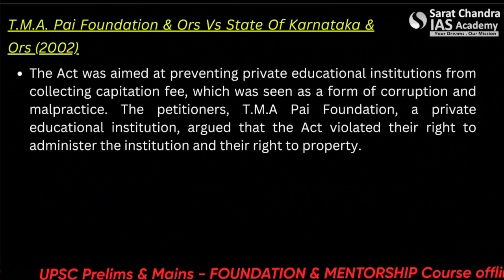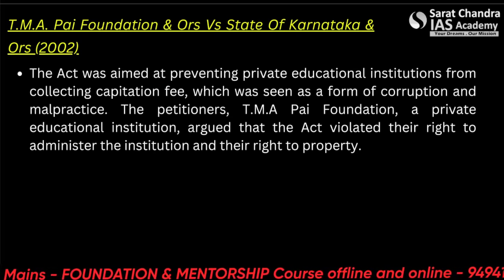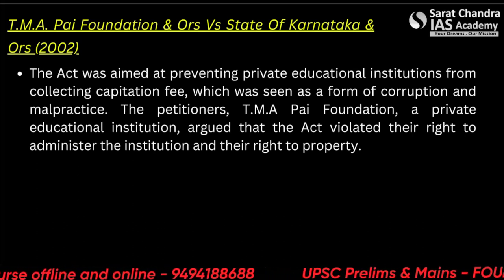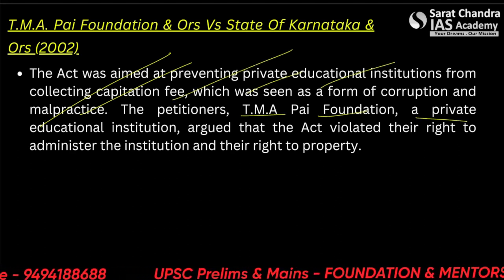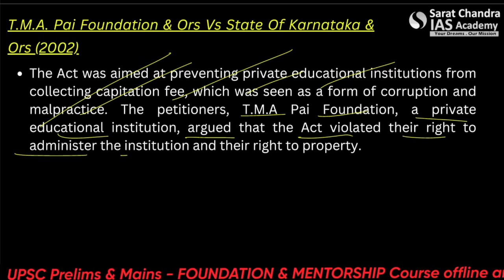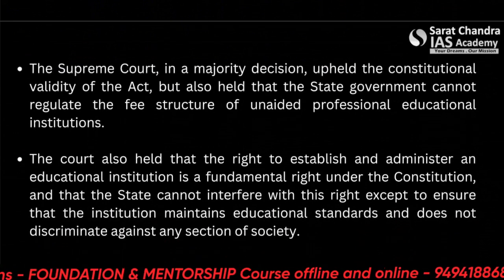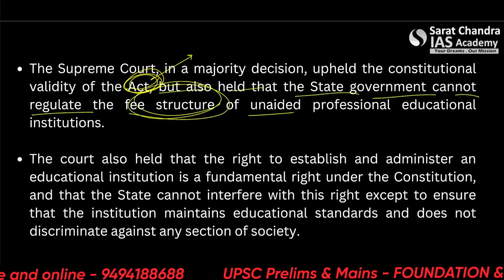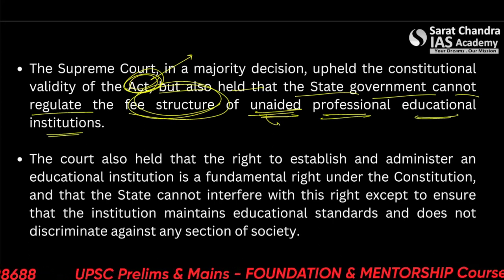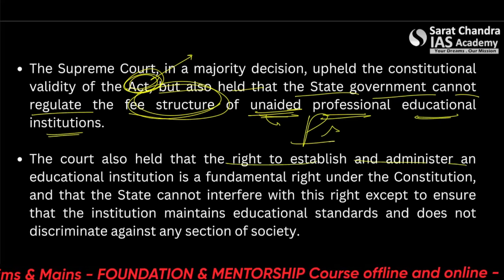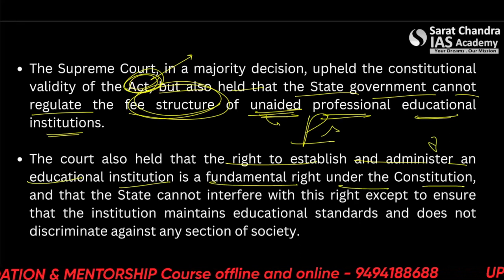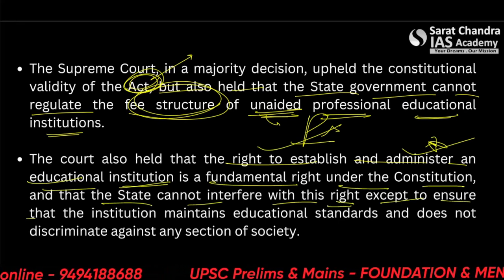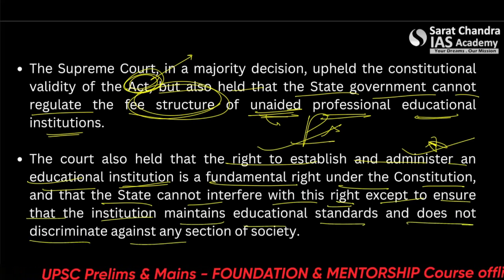The last case is TMA Pai Foundation and others vs State of Karnataka, which happened in 2002. The act was aimed at preventing private education institutions from collecting capitation fees, which was seen as a form of corruption and malpractice. The petitioner, TMA Pai Foundation — a private educational institution — argued that the act violated their right to administer the institution and their right to property. The Supreme Court in a majority decision upheld the constitutional validity of the act, but also held that the state government cannot regulate the fee structure of unaided professional educational institutions — meaning completely private institutes. The court also held that the right to establish and administer an educational institution is a fundamental right under the constitution, and the state cannot interfere with this right except to ensure that the institution maintains educational standards and does not discriminate against any section of society.